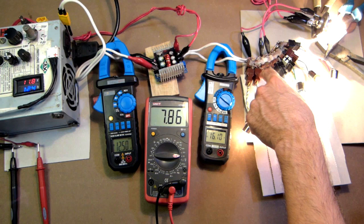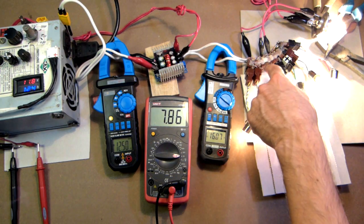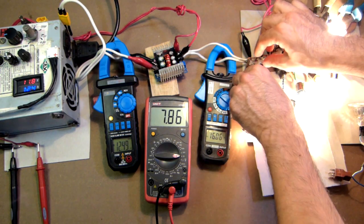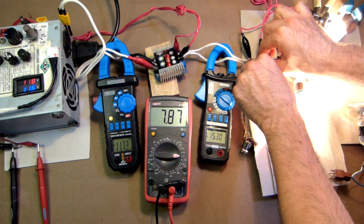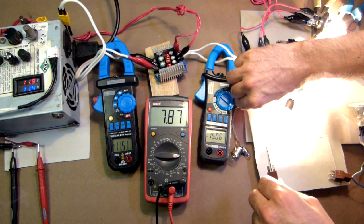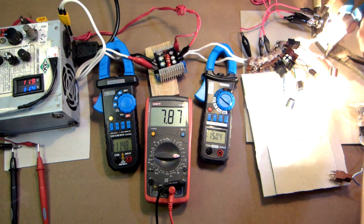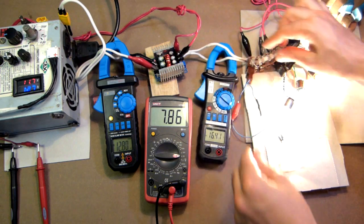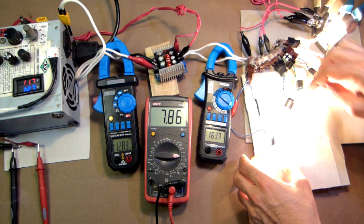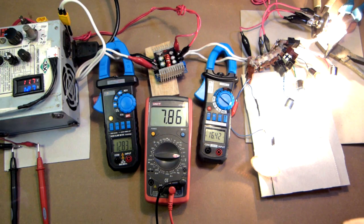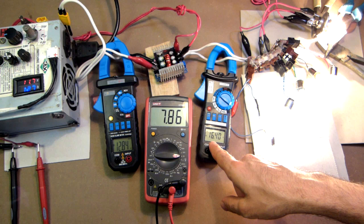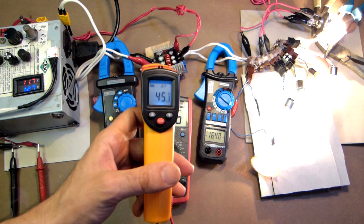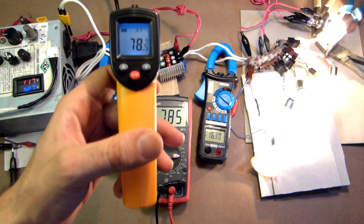Let's try to switch off these two loads of approximately 15W and add the load of 20W. So here we have 16 amps. Here we have 7.8 volts. Let's measure the temperature. 45. 78.